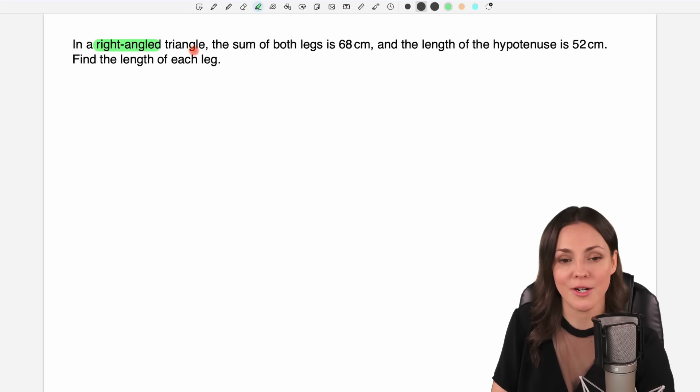In a right angle triangle, the sum of both legs is 68 centimeters and the length of the hypotenuse is 52 centimeters. Find the length of each leg.